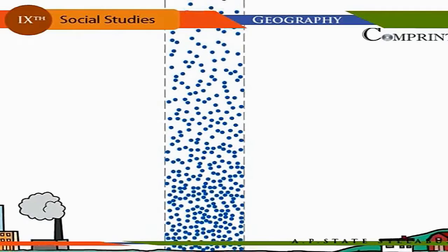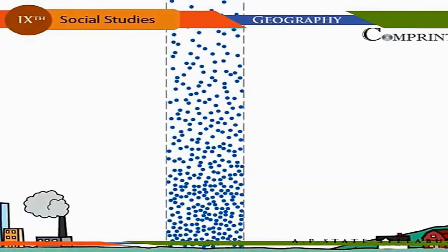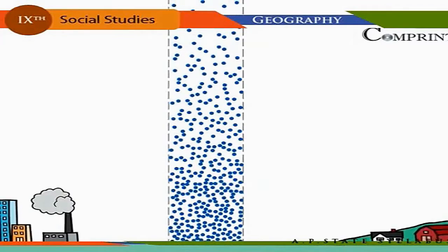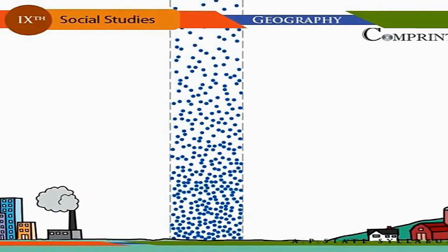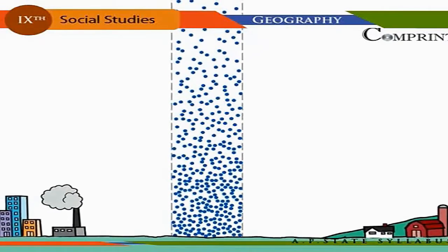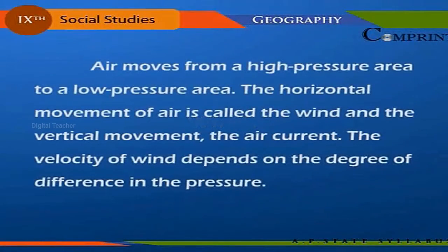There are seven such pressure belts on the earth's surface. They are: one, the equatorial low pressure belt; two, the subtropical high pressure belts; three, the subpolar low pressure belts; and four, the polar high pressure belts.